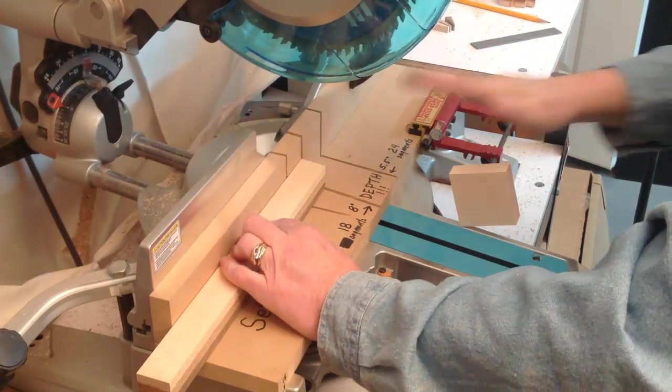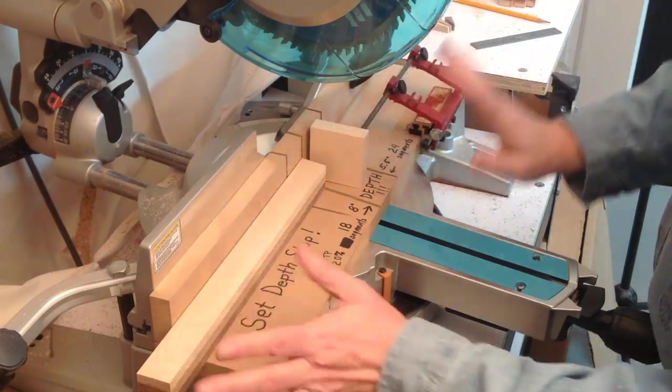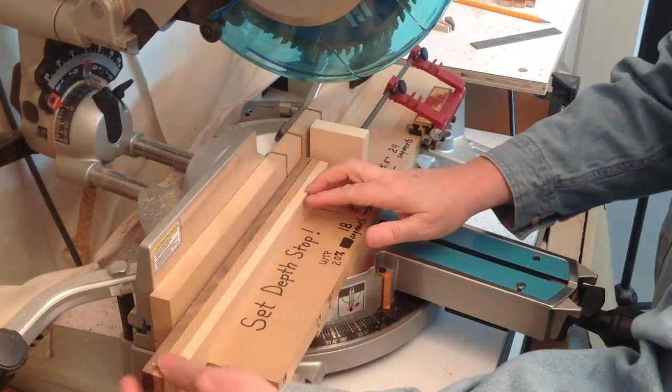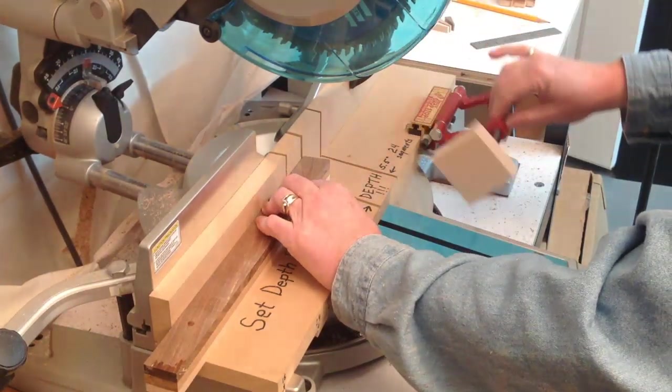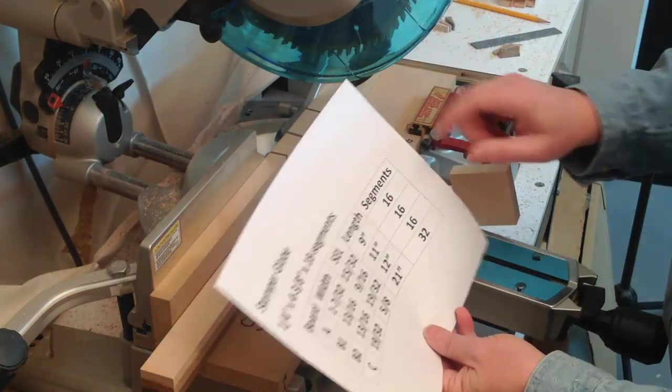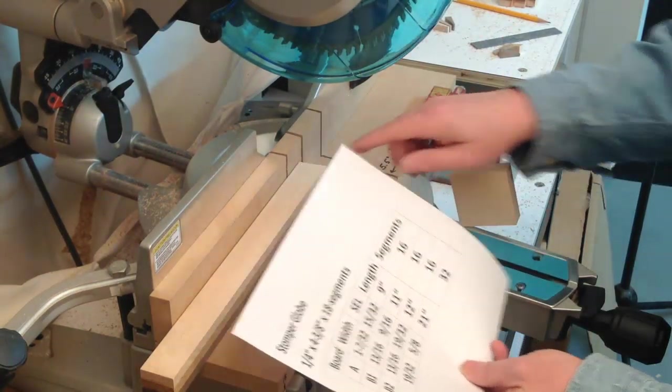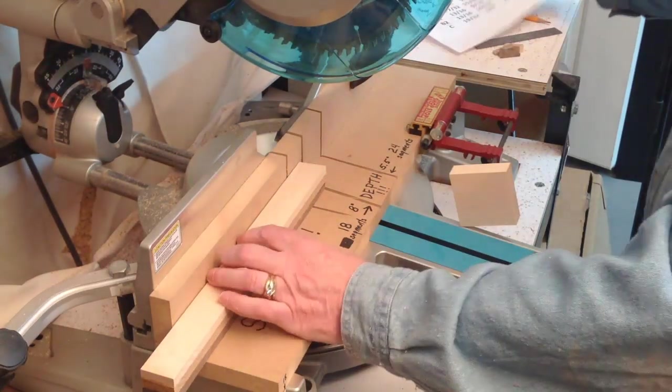And that's going to give us our first cut. So now, from now on, you're just going to put the stop into place, roll the board over, make sure it's firmly against the fence, move the stop out of the way, and make your... It says that we need to make 16 segments of each of these species. And so just continue making your cuts.